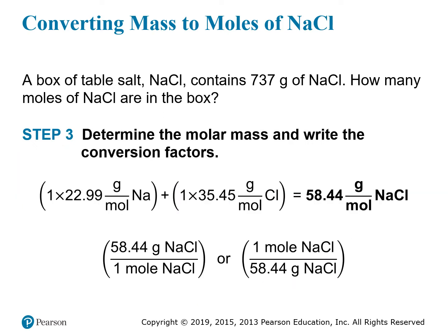Step three is to obtain the molar mass, which is the conversion factor we need. Sodium chloride contains just one sodium atom and one chlorine atom. The mass of sodium from the periodic table is 22.99, and chlorine is 35.45. Since we have one of each, we just add them together: the molar mass of sodium chloride is 58.44 grams per mole. So the two conversion factors are 58.44 grams per mole, or one mole per 58.44 grams.